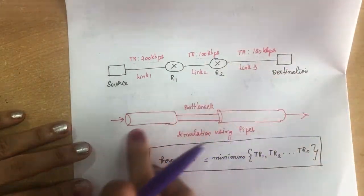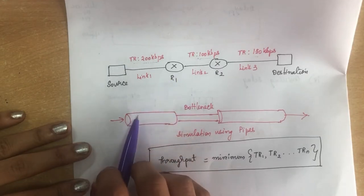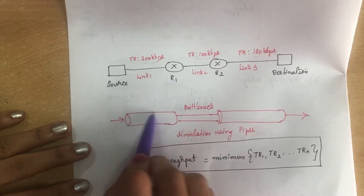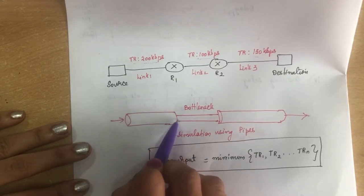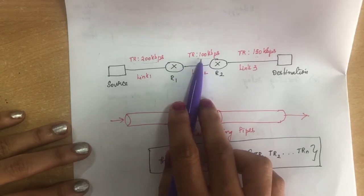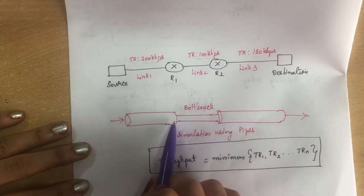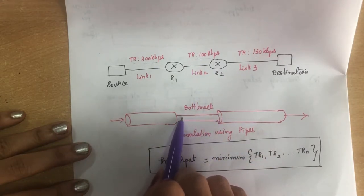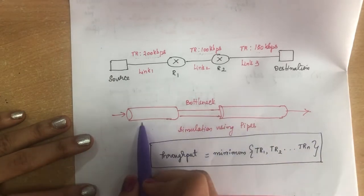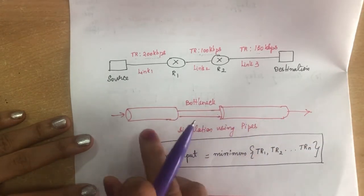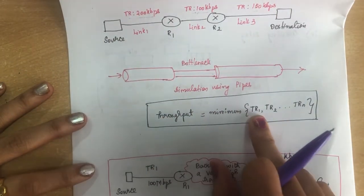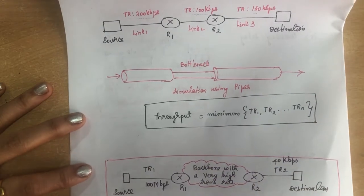This is simulated in a diagram where the link between source and router is shown, and the link between R1 and R2 at 100 kbps has reduced diameter, then it sends at 150 kbps. The throughput will be the minimum of all transmission rates. So throughput = minimum of tr1, tr2, and trn.